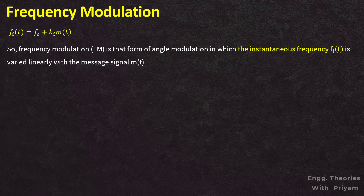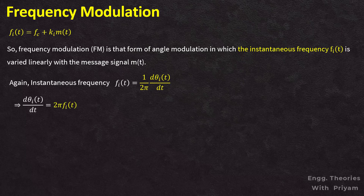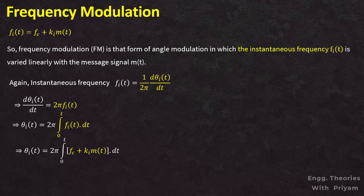Frequency modulation is that form of angle modulation in which the instantaneous frequency fi(t) is varied linearly with the message signal m(t). Since fi(t) = (1/2π) · d/dt·θi(t), we can write d/dt·θi(t) = 2π·fi(t). Performing integration on both sides gives θi(t) = 2π · ∫₀ᵗ fi(τ) dτ. Substituting fi(t) = fc + ki·m(t) and integrating yields θi(t) = 2πfc·t + 2πki · ∫₀ᵗ m(τ) dτ.